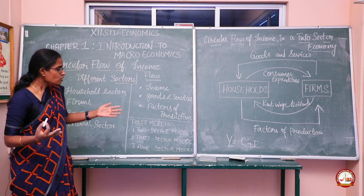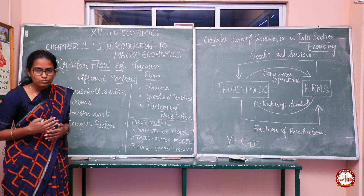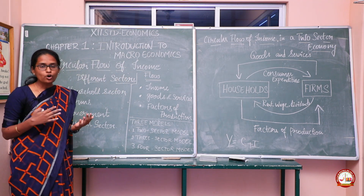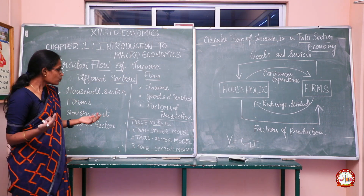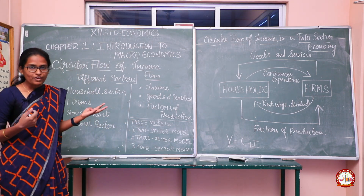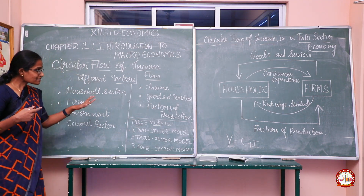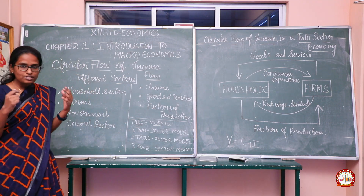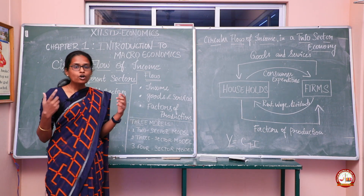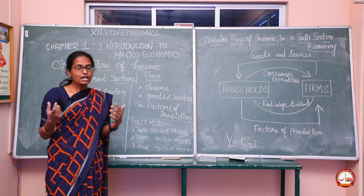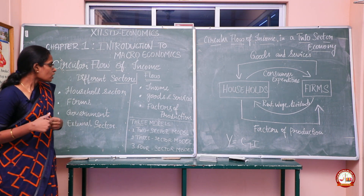The flow in this model is related to income, goods and services — how much is being produced and how much is being consumed. As we know, the factors of production are land, labor, capital, and organization. This model tells us what the connection is between the different sectors in the economy and how economic activities flow through the circular flow of income model.